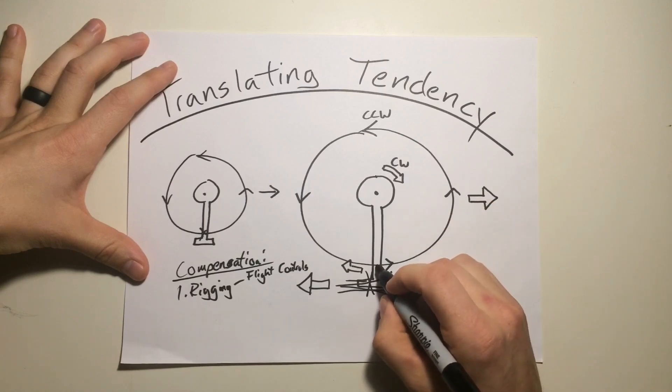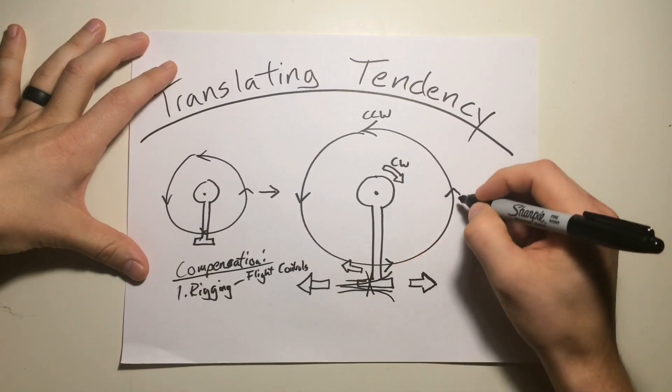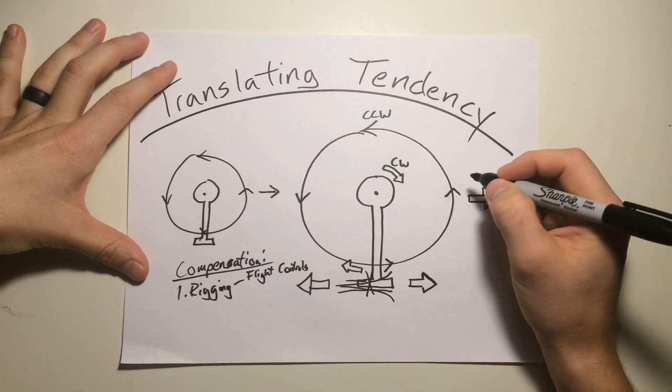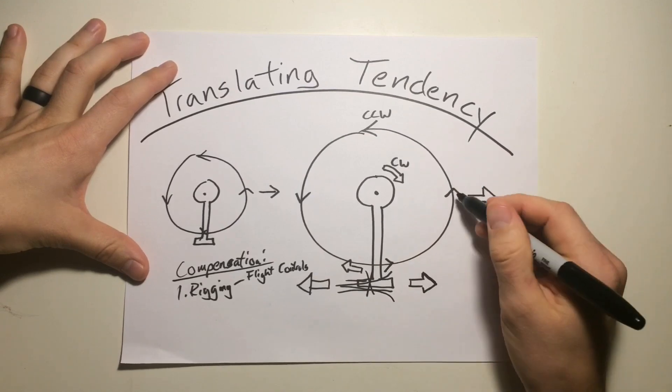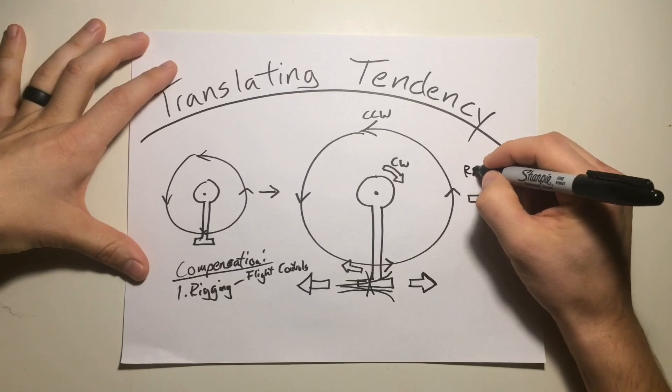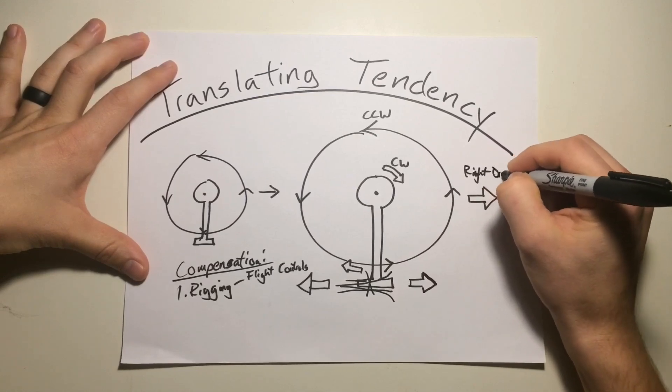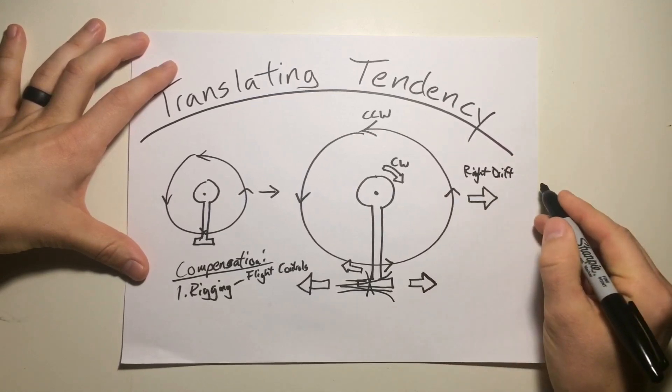So, you have an increase in pitch of the tail due to gyroscopic precession. This is going to manifest 90 degrees later as an increase in pitch on the right side, causing a counteraction of that right drift from the translating tendency.